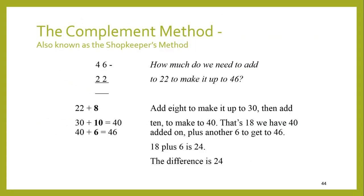The complement method is also called the shopkeeper's method: how much do we need to add to 22 to make up to 46? This is when you're giving change — bought something for $22 and paid with $46. We say 8 onto 22 gives you 30, another 10 gives you 40, and then we count out another $6 — that's the way shopkeepers do it, so the difference is 24. That's our complement method, and it's not as commonly used in schools as it could be, but it is a useful one.